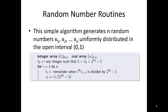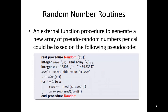An external function procedure to generate a new array of pseudo-random number generators per call could be based on the following pseudo-code. To allow for adequate representation in numbers involved in a procedure random, it must be written by using double or extended precision for use on a 32-bit computer.